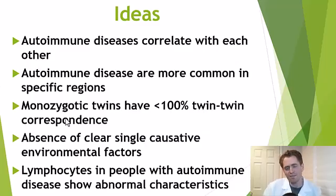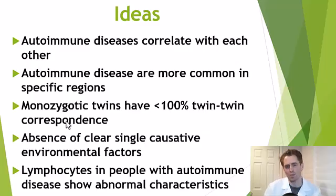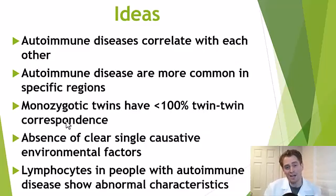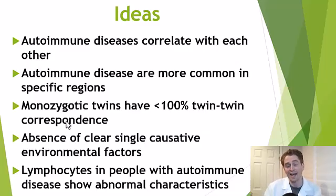If you study the lymphocytes — the B and T white blood cells — in people with autoimmune diseases, there are some abnormal characteristics. For instance, in people with multiple sclerosis, the T cells are more likely to have a Th1 phenotype compared to a T helper cell type 2 phenotype, which seems to be associated with the inflammation of the disease. So there's a possibility that some environmental factor causes all autoimmune diseases by changing the characteristics of lymphocytes, making an individual with a certain genetic susceptibility develop a specific autoimmune disease.